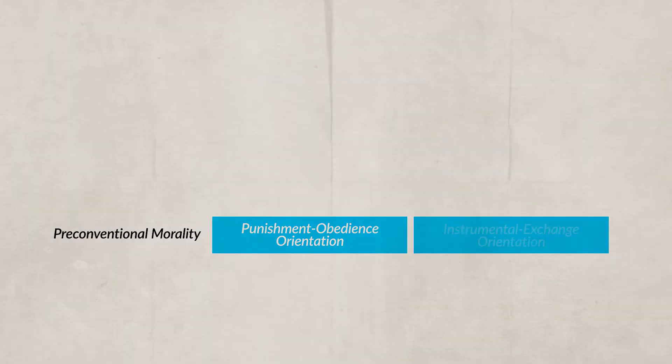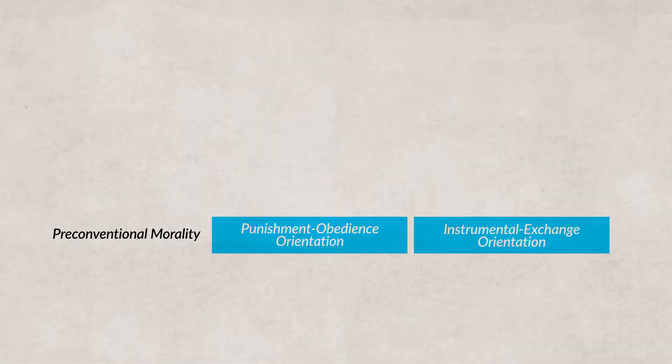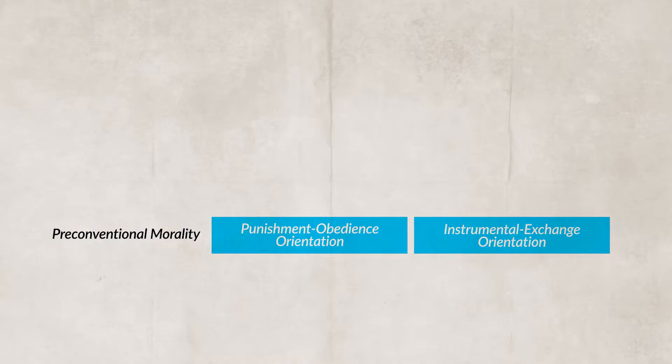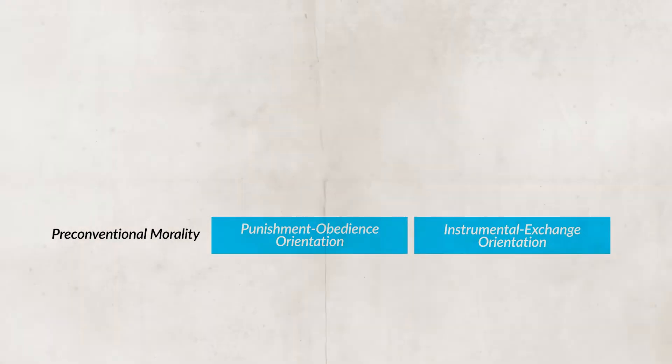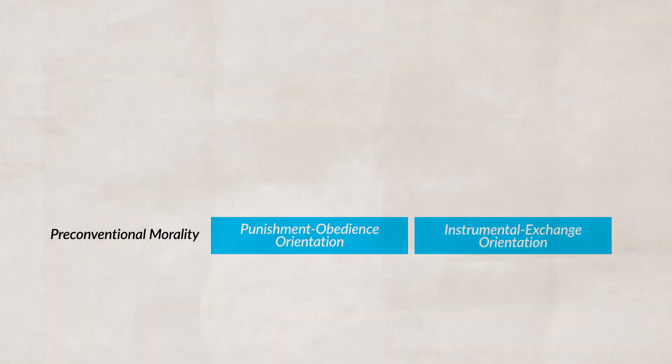The next stage is instrumental exchange orientation. As the child becomes older, they focus on following the rules. Here, the child is driven by self-interest and external reward.